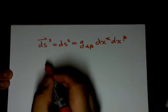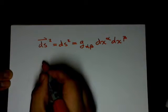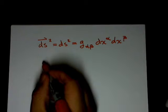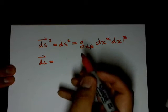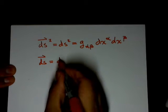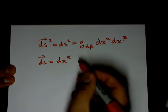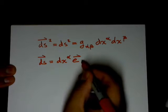So let's see, we got your differential displacement vector, and we can define it as dx super alpha e sub alpha.